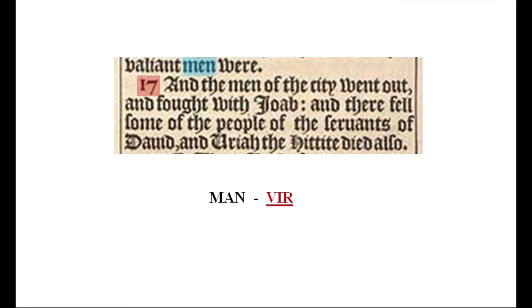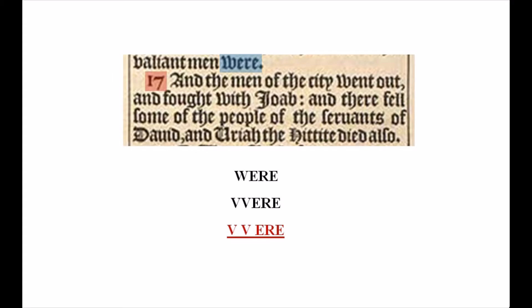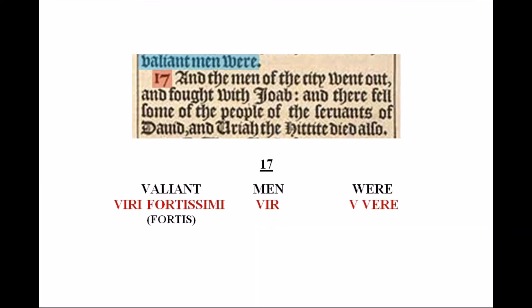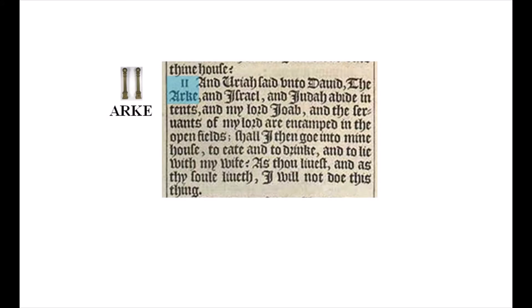Next to 'valiant' is the word 'men.' In Latin, man is 'vir,' V-I-R. And next to that is 'were,' spelled W-E-R-E. A W is comprised of two Vs, so 'were' can be read as V-V-E-R-E — double V, vir. So three times above the number 17 there's a reference to vir: 'valiant men were' is 'viri fortissimi,' or fortis, vir, and double-V vir.